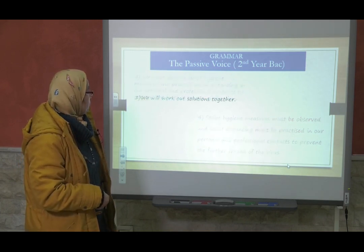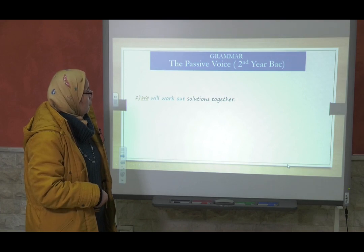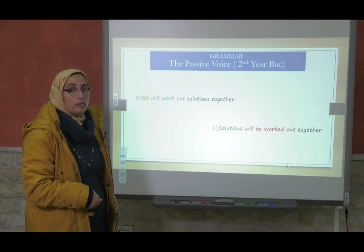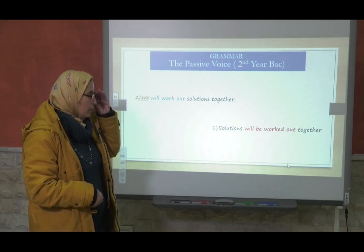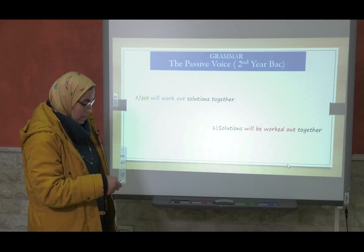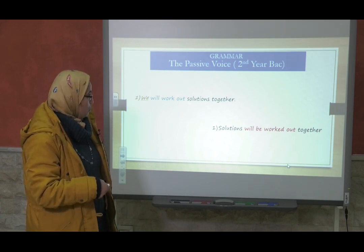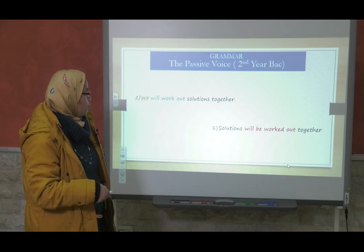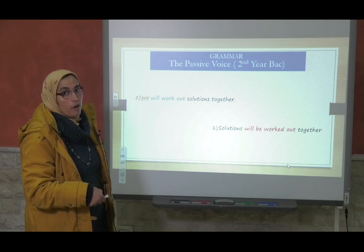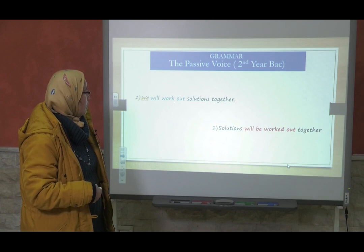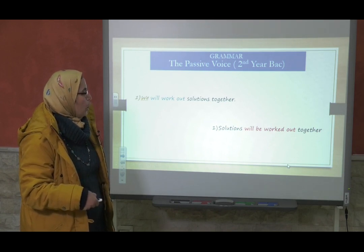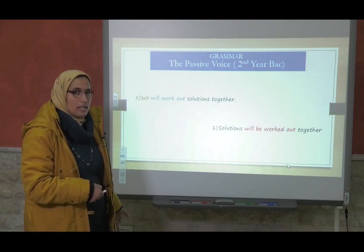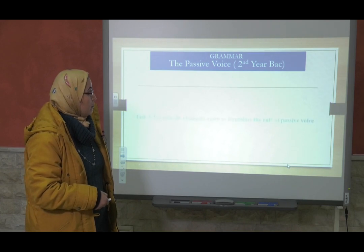One more example. 'We will work out solutions together.' Who will work out solutions together? We. But who are we? Not exactly clear. So it's not important to keep 'we' in the passive form. We keep 'solutions' and change it to the place of the subject. 'Solutions will be worked out.' The verb is in the simple future — 'will work' becomes 'will be worked' plus past participle. This is the passive voice.